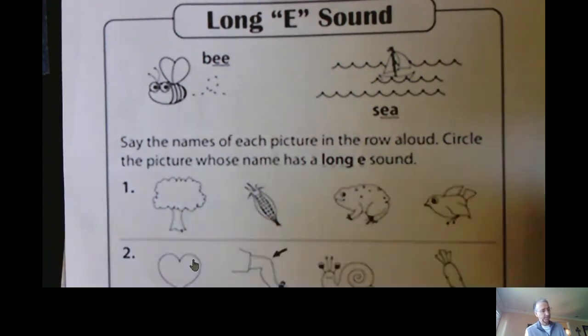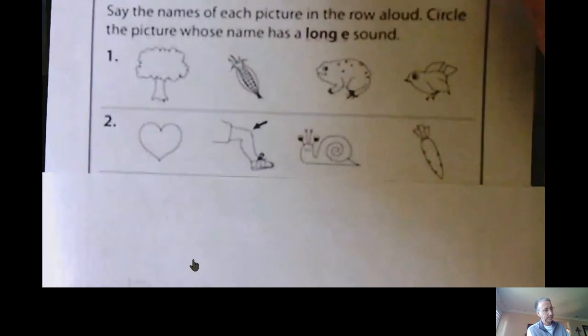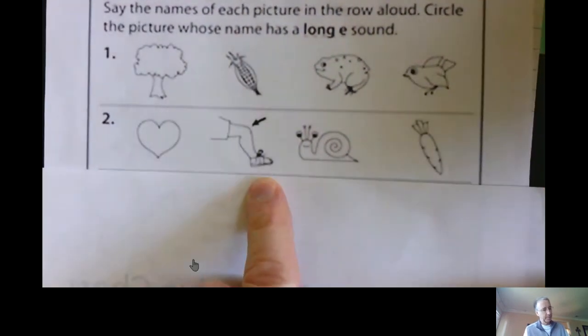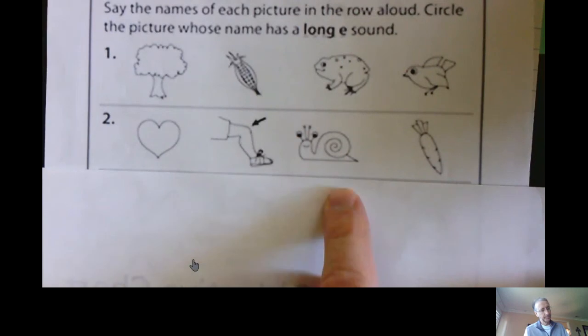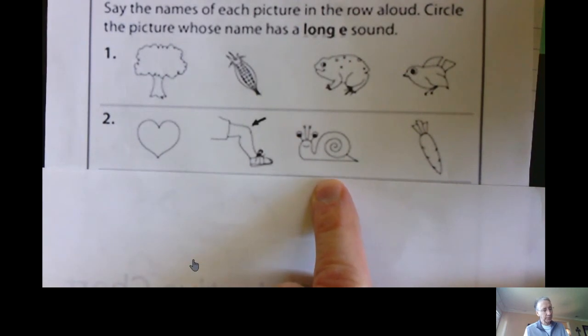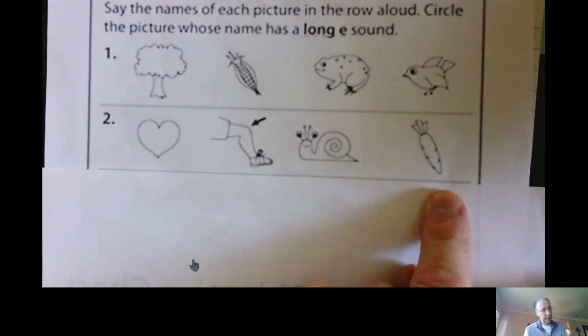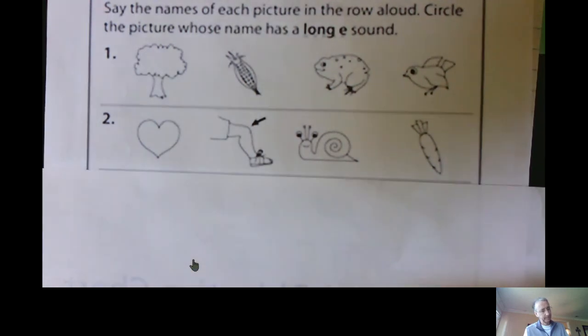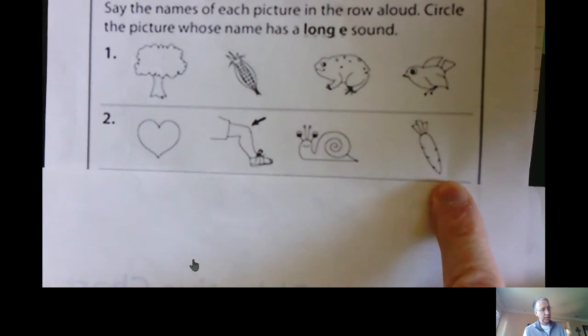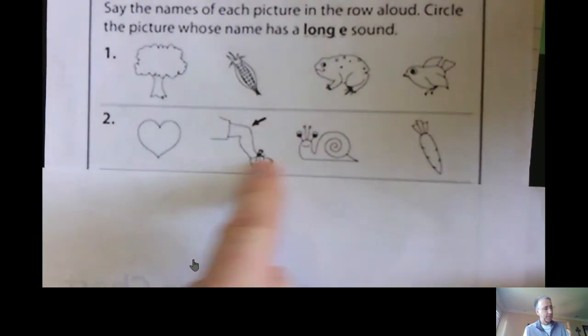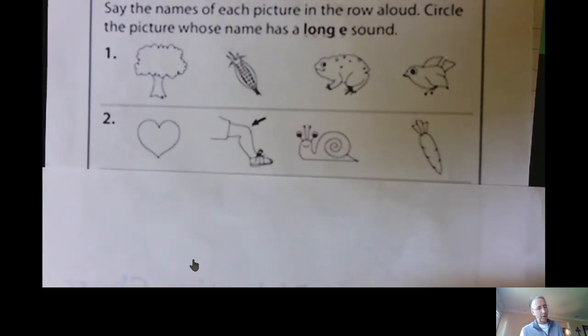Next one. Heart, knee, snail, carrot. Which one has the long E sound in the word as you sound it out? Knee, good job. I'm going too fast. Pause the video, okay?